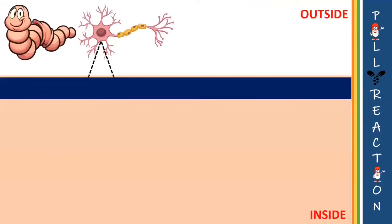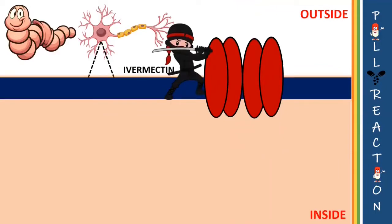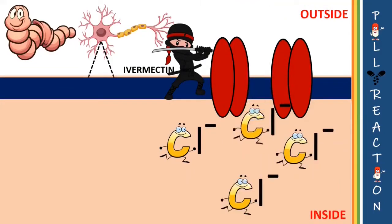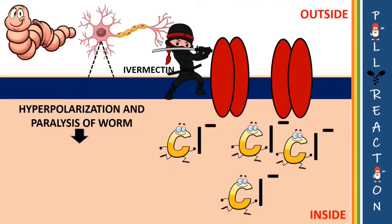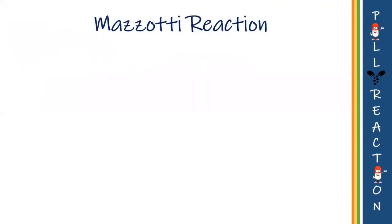Ivermectin is a semi-synthetic anthelmintic agent which is very effective against microfilariae. If we zoom into the microfilarial nerve, we have glutamate-gated chloride channels. Ivermectin binds to these glutamate-gated chloride channels, which increases the permeability of the cell membrane to chloride ions, leading to hyperpolarization and paralysis of the worm, resulting in the death or phagocytosis of worms.